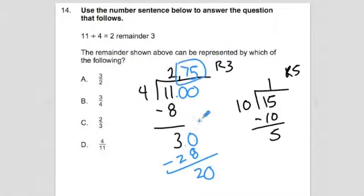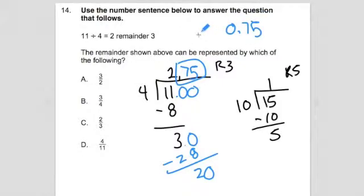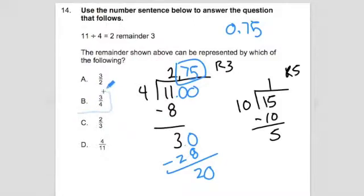And 0.75 represented as a fraction — we did the conversion and found that the remainder of 3, when turned into a decimal, is 0.75. That would be answer B.